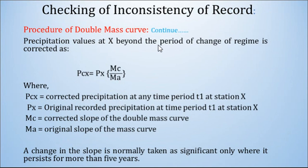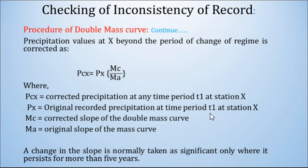A decided break in the slope of this plot indicates a change in the precipitation regime of station X. Precipitation values of X beyond the period of change are corrected using the formula: P_CX = PX × (MC / MA), where P_CX is the corrected precipitation at any time period T1 at station X, MC is the corrected slope of the double mass curve, and MA is the original slope of the double mass curve. A change in slope is normally taken as significant only when it persists for more than 5 years.